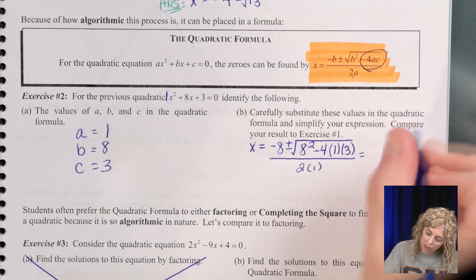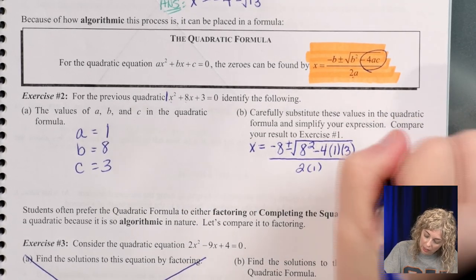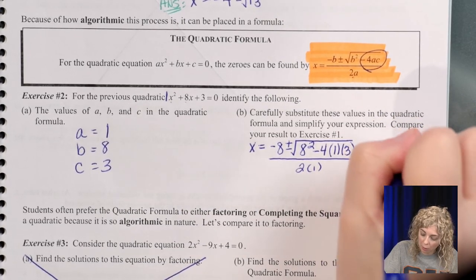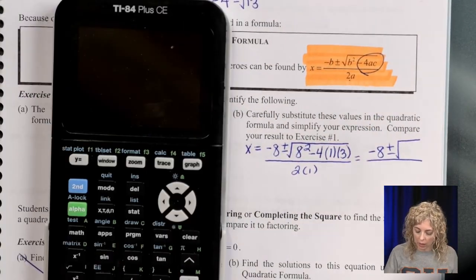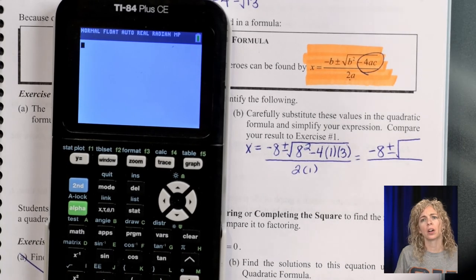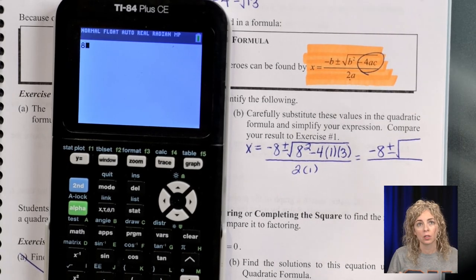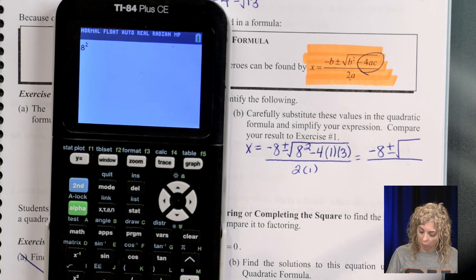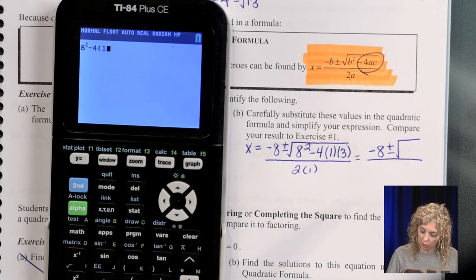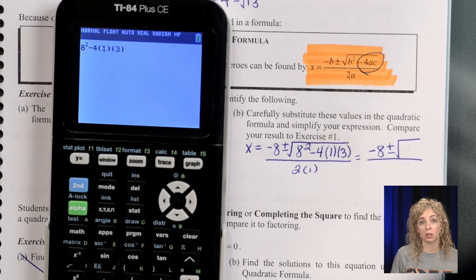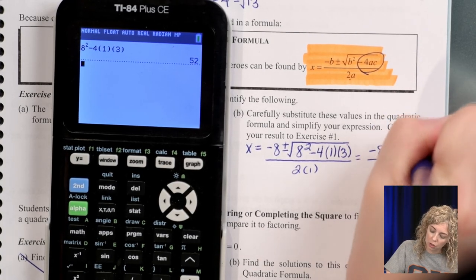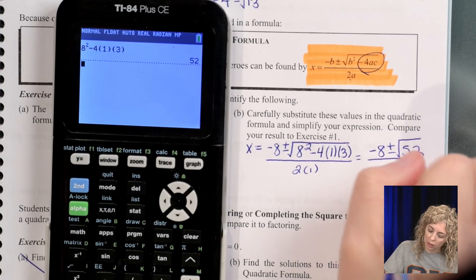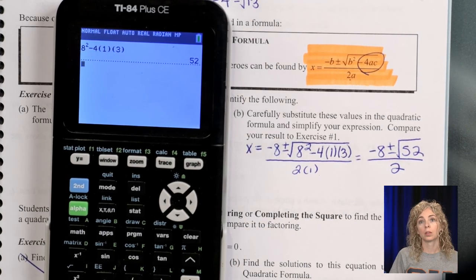So I'm going to write it over here. I'm going to draw my long line, and we have negative 8. There's no math there. Plus or minus. Let's write the radical. And I want you to type the next part all underneath your calculator. So 8 squared minus 4 parenthesis 1 parenthesis 3, as the parentheses represent multiplication. So this is the square root of 52, and then 2 times 1 is 2.